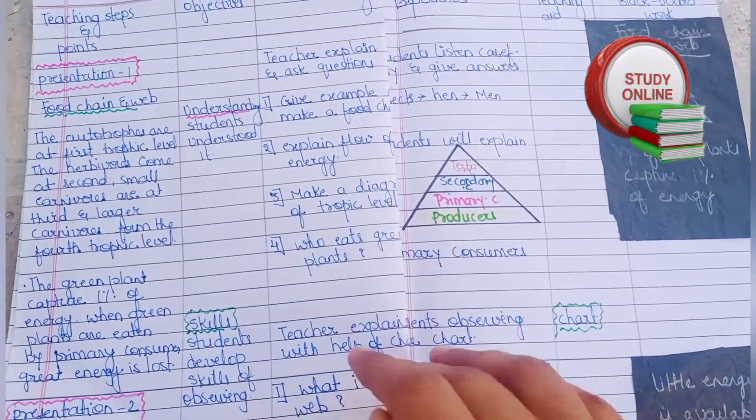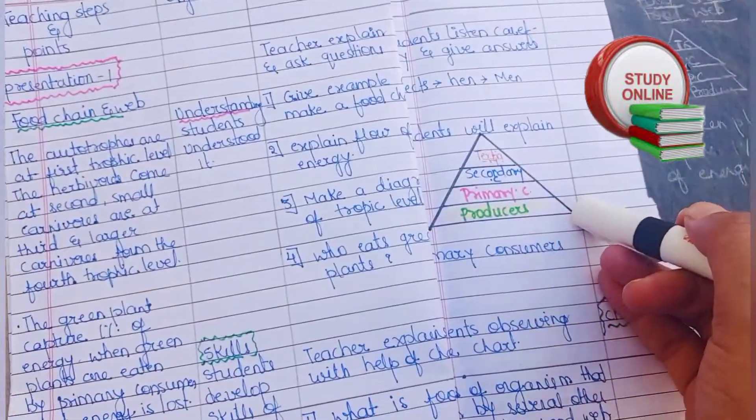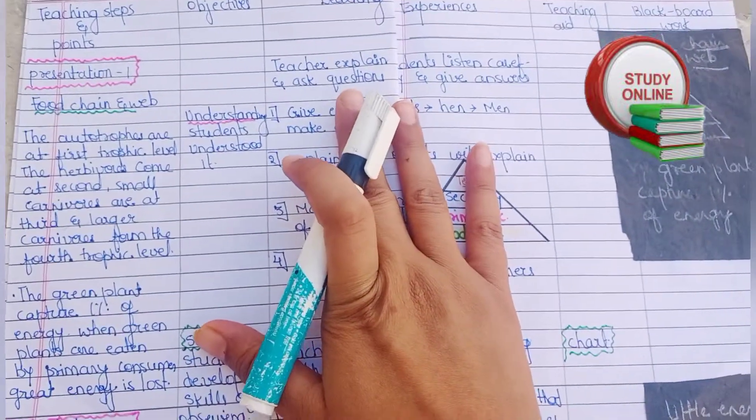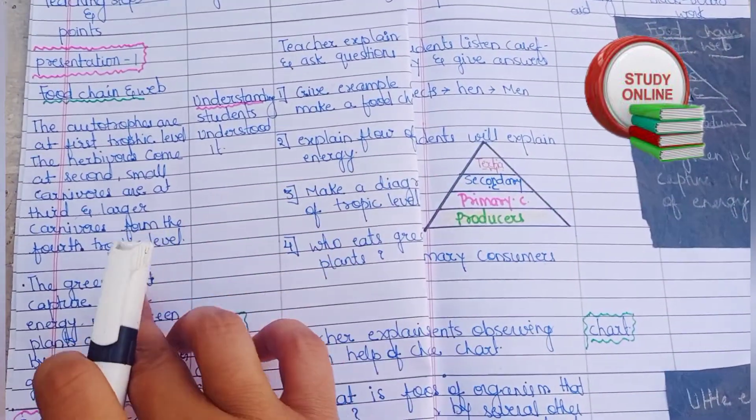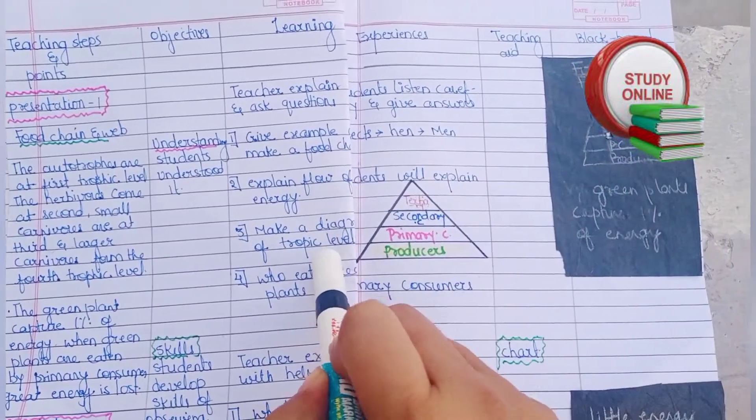Here you can see presentation one. For presentation one, I have written all this content. You can write it and you also have to make this diagram here. I do not have space to make this diagram, but you should include it. After that, here you can see the question and the expected answer.